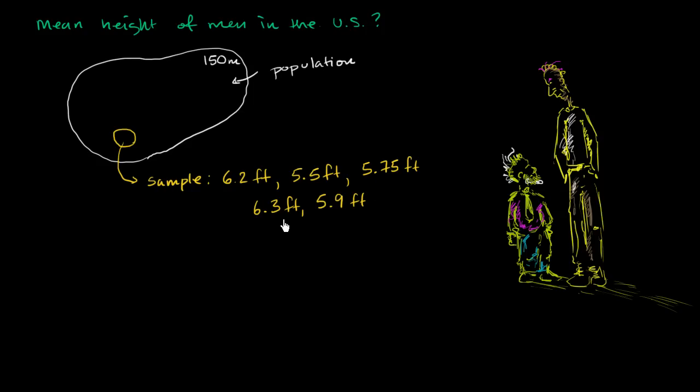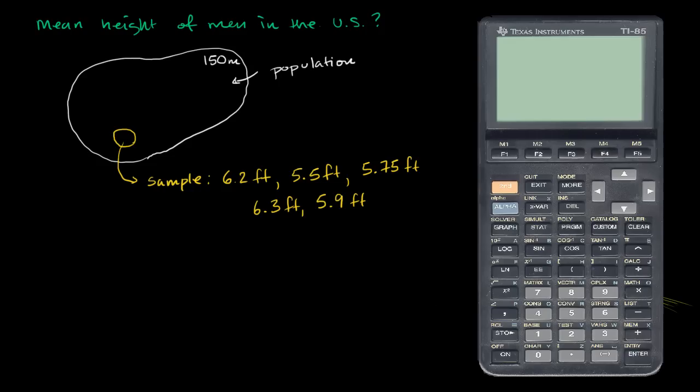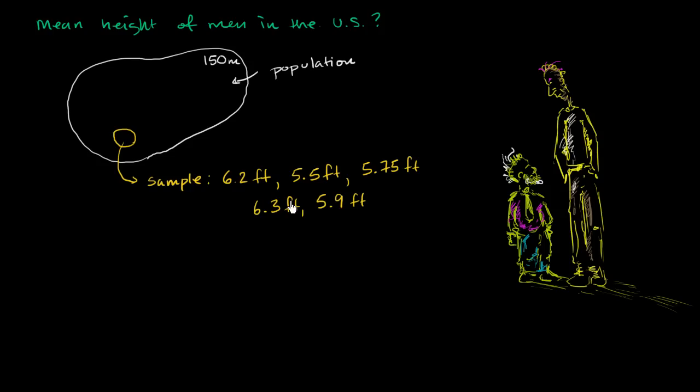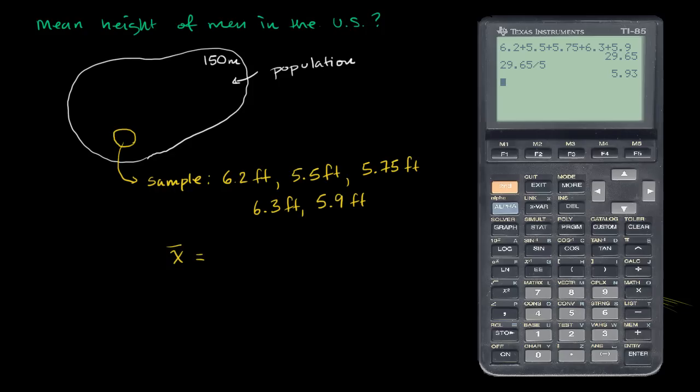Now, if these are the ones that you happen to sample, what would you get for the mean of this sample? Well, let's get our calculator out, and we get 6.2 plus 5.5 plus 5.75 plus 6.3 plus 5.9. The sum is 29.65, and then we want to divide by the number of data points we have, so we have five data points. So 29.65 divided by 5, and we get 5.93 feet. So here, our sample mean, denoted with an x̄ with a bar over it, is 5.93 feet.